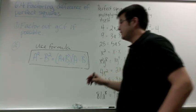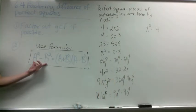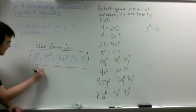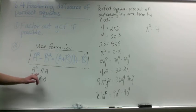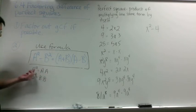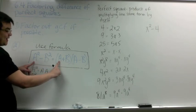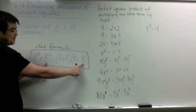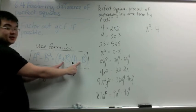If we take a look at the formula, we have a difference of perfect squares: a squared minus b squared. The reason why a squared is a perfect square is because we have a times a, and the reason why b squared is a perfect square is because b times b. We put it as two binomials separated by an addition and a subtraction sign.